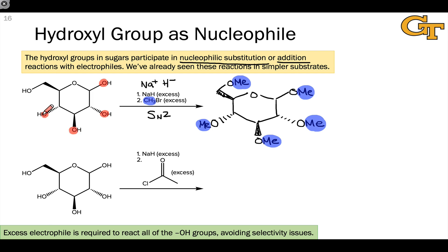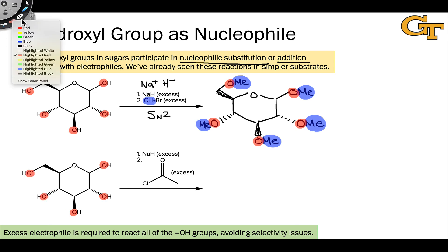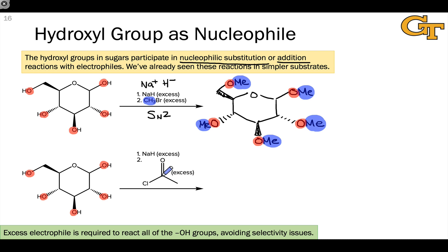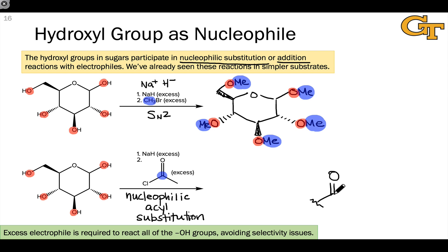Because we're using a large excess of sodium hydride, we end up with complete reaction of all the hydroxyls. The second example is similar in that sodium hydride is used to deprotonate all of the hydroxyl groups, converting them to nucleophilic anionic alkoxides. But the electrophile we're using is different — we've switched from an alkyl halide to an acyl halide. So from the electrophile's perspective, this reaction looks like nucleophilic acyl substitution. If we abbreviate the acetyl group as Ac, the final product looks like this.